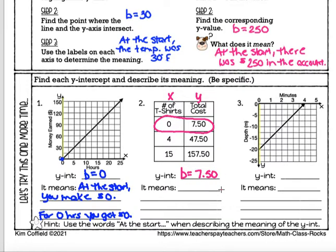Now, as far as what this means, we're looking at our labels here. So the number of t-shirts cost 750. Four t-shirts are 47.50. 15 t-shirts are 157.50. Zero t-shirts are 750. So this means that at the start, before you buy any t-shirts, at the start, you have to pay $7.50.